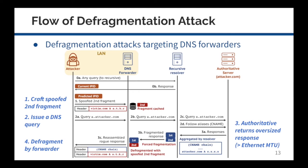And finally, when the response arrives at the DNS forwarder, the legitimate first fragment will be reassembled with the spoofed second fragment that has been cached, because their IP IDs match. And as we discussed earlier, because DNS forwarders lack security checks, they will not notice that the response has been tampered with and will accept the rogue DNS answers. If the victim DNS record is cached individually by the forwarder, next time when the victim domain is queried, the rogue address will be returned.